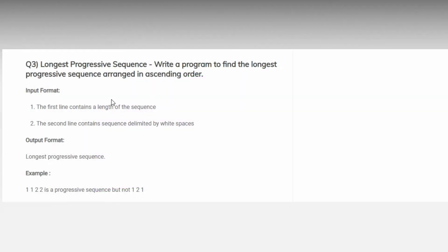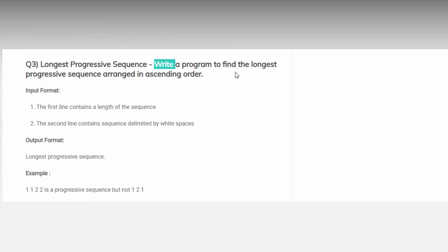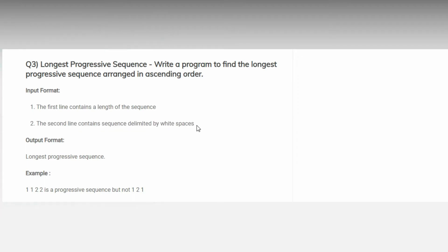Welcome back. Today's task is the Longest Progressive Sequence. We have to write a program to find the longest progressive sequence arranged in ascending order. The input format: the first line contains the length of the sequence, and the second line contains the sequence delimited by white spaces. The output is the longest progressive sequence. A progressive sequence is where numbers are arranged in ascending order — for example, one one two two is a progressive sequence, but one two one is not.